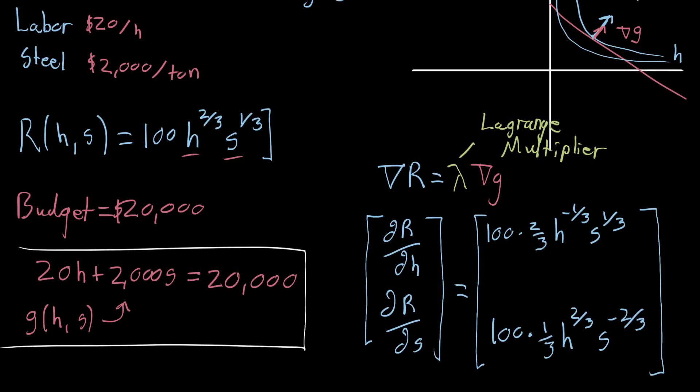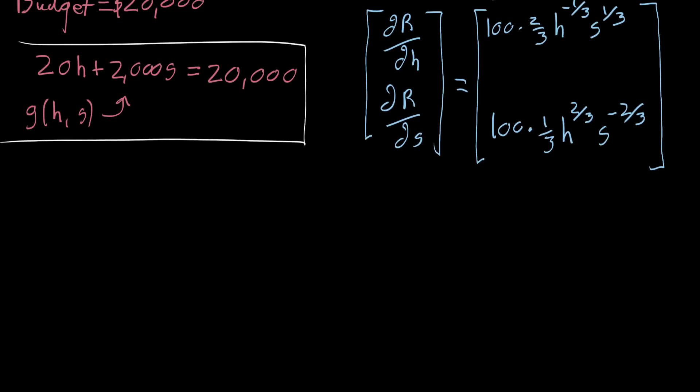And now we need the gradient of g. And that one's a lot easier actually, because g is just a linear function. So when we take the gradient of g, which is its partial derivative with respect to h, partial h, and its partial derivative with respect to s, partial s. Well the partial with respect to h is just 20. The function looks like 20 times h, plus something that's a constant. So that ends up being 20. And then the partial with respect to s, likewise it's just 2,000. Because it's just some constant multiplied by s, plus a bunch of other stuff that looks like constants. So that's great.